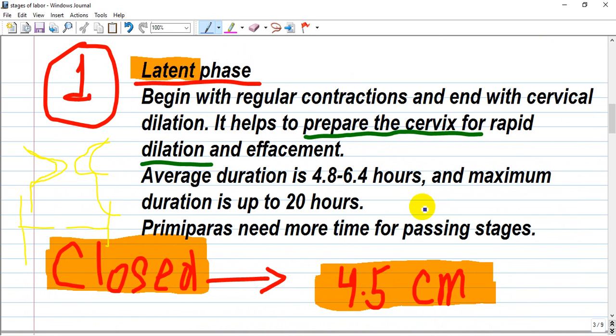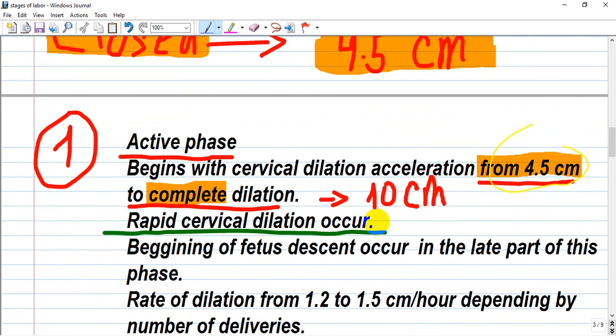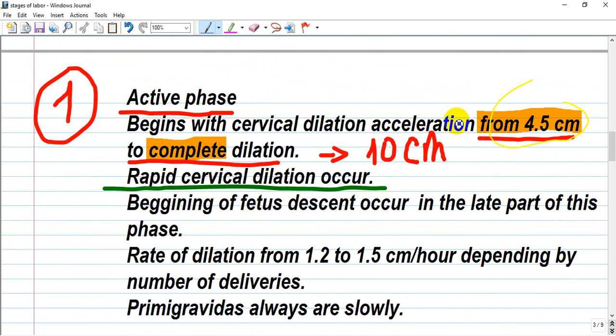need more time for passing any stage. Here you see the cervix and what effacement means. It's shortening and thinning of the cervix, which can be measured by ultrasonography. The active phase of the first stage begins with